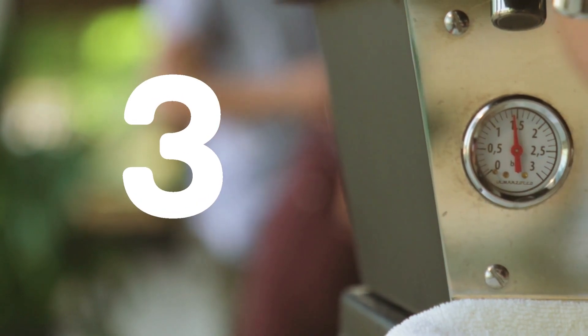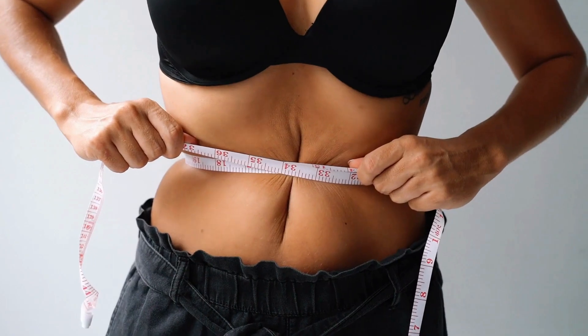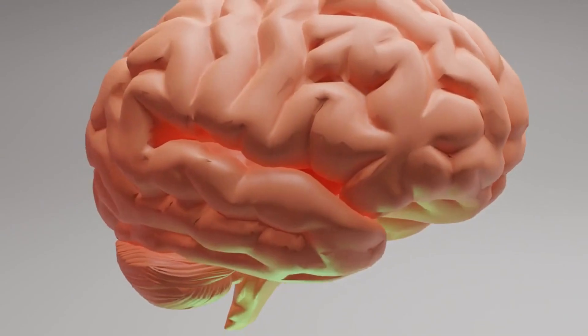Speaking of weight, did you know that your brain weighs about 3 pounds and 60% of its dry weight is fat? That makes it the fattiest organ in our body.